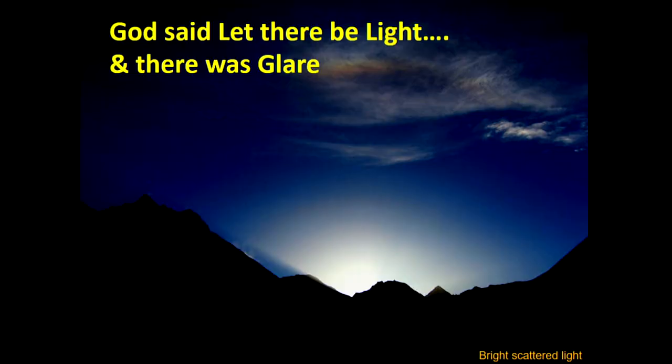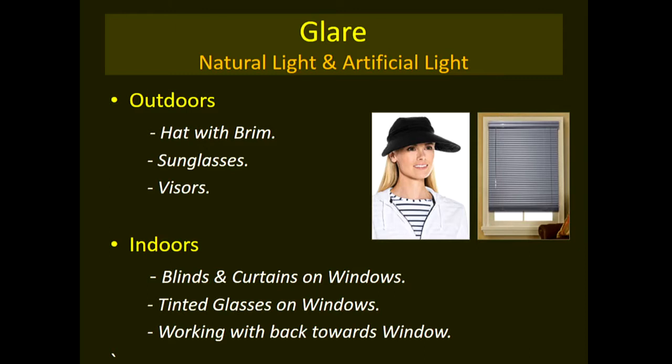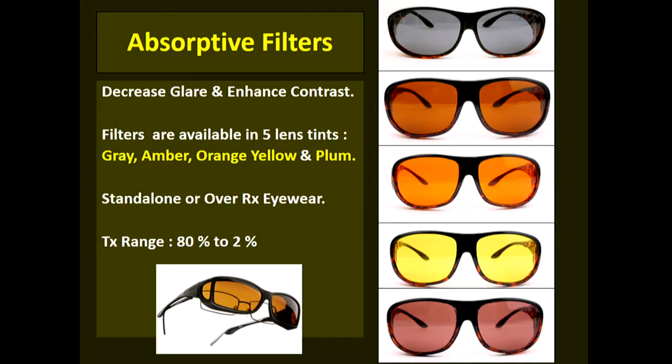Glare is very incapacitating, both for normal people and even more so for low vision patients. Outdoors, the best way to combat glare is to wear a hat with a brim, sunglasses, or visors. Indoors, use blinds and curtains on windows, tinted window glass, or work with the back towards the window. These are simple ways to cut down glare for low vision patients.